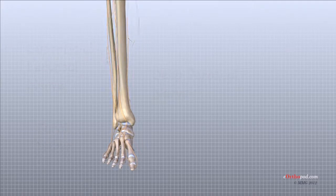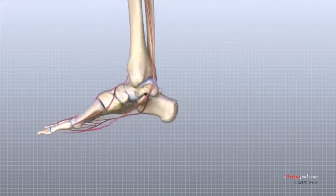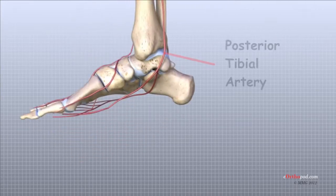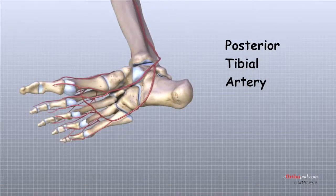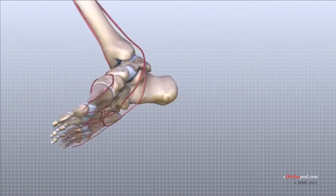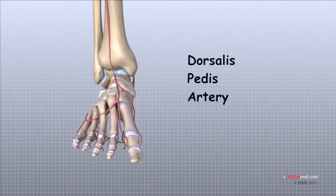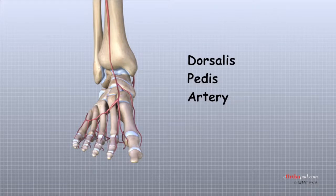The main blood supply to the foot, the posterior tibial artery, runs right beside the nerve of the same name. This artery travels into the sole of the foot where it forms an arch just behind the ball of the foot. A second artery, the dorsalis pedis, runs down the top of the foot. You can feel your pulse where this artery runs in the middle of the top of the foot.